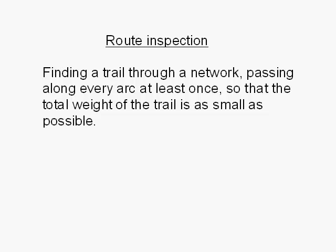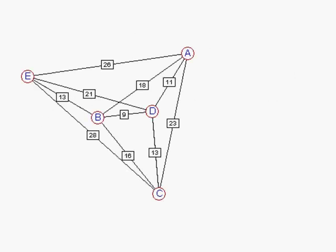Hi. This video is about route inspection of networks, which is finding a trail through a network passing through every arc at least once, so that the total weight of the trail is as small as possible. Let's look at a network straight away and the kind of problem that a postman might have delivering letters along a series of streets, or a policeman patrolling streets. This is a common problem in network theory.